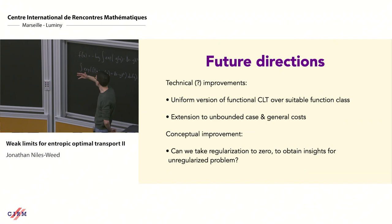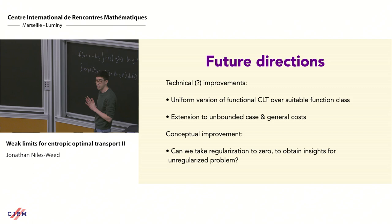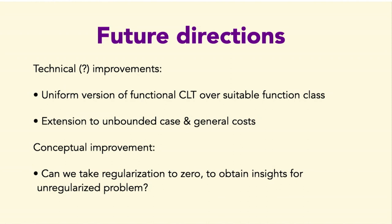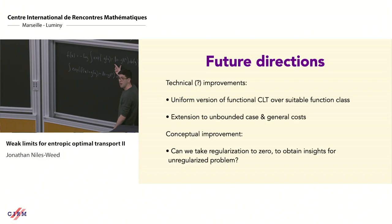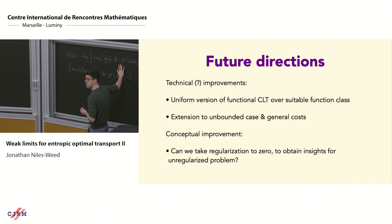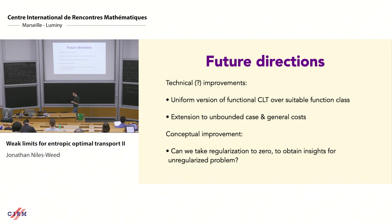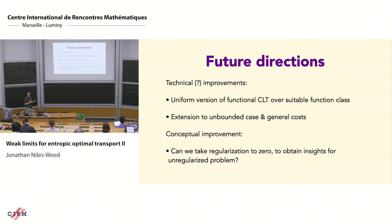Some improvements are probably merely technical but important: obtaining the CLT for the plan uniformly over some function class — not all of L^2 (too large) but over any Donsker class — should be doable. Extension to the unbounded case is more challenging: we don't know the right weighted Hölder space in which to carry these arguments. Extension to general costs is also challenging: if I work with regularized W1 using Euclidean norm rather than squared Euclidean norm, I lose the heat kernel smoothing that was crucial. All the smoothness estimates that allowed the CLT fall apart under non-smooth costs, and we don't know how to handle that.